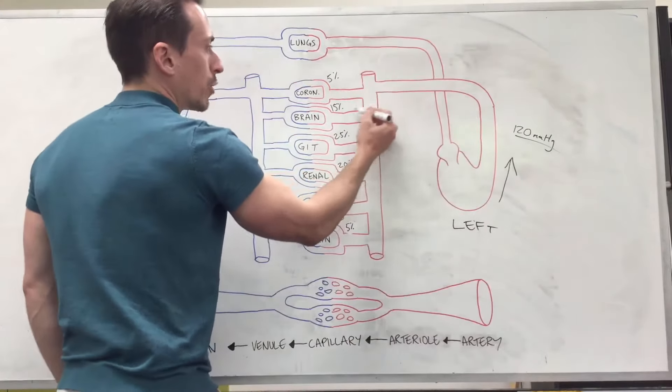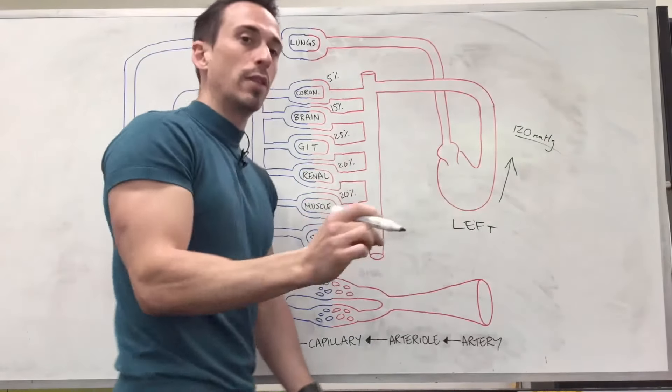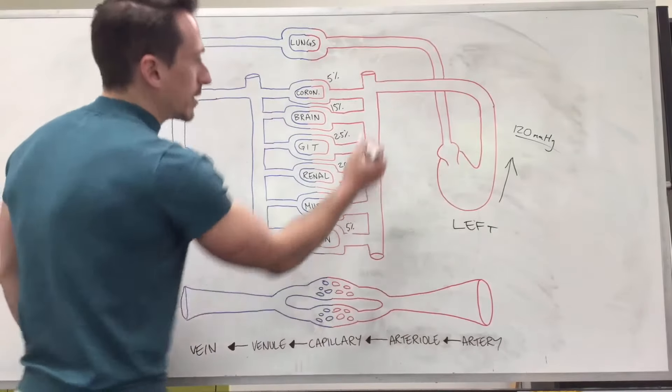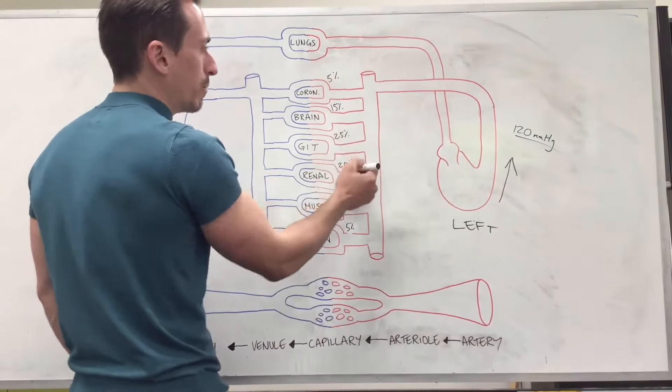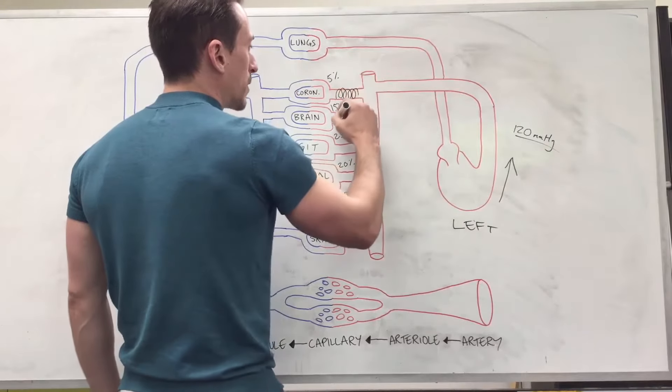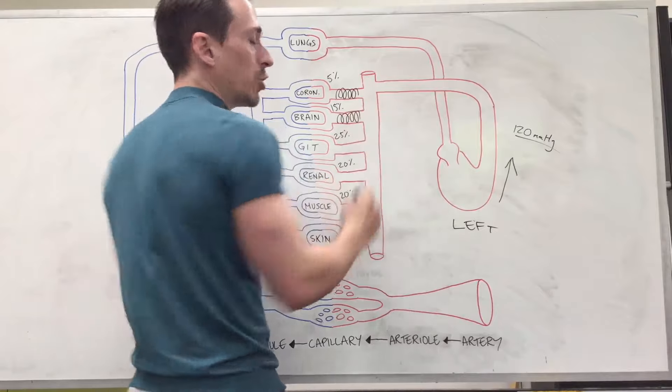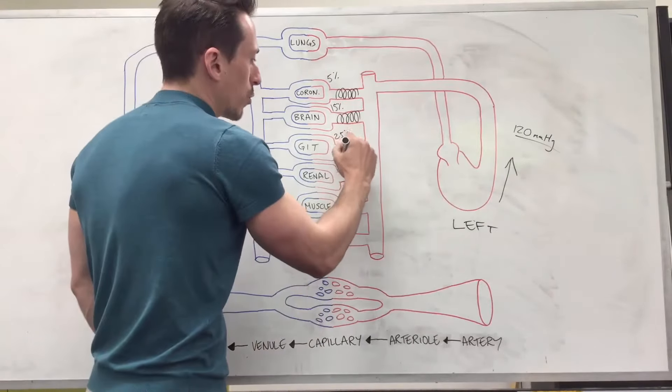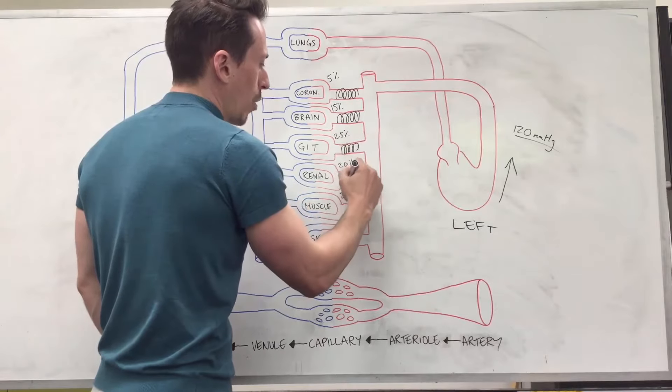As we move from arteries they branch off into these multiple smaller blood vessels called arterioles. Now these arterioles lead into capillary beds but an important point about arterioles is they have heaps of smooth muscle. They have huge amounts of smooth muscles surrounding them.